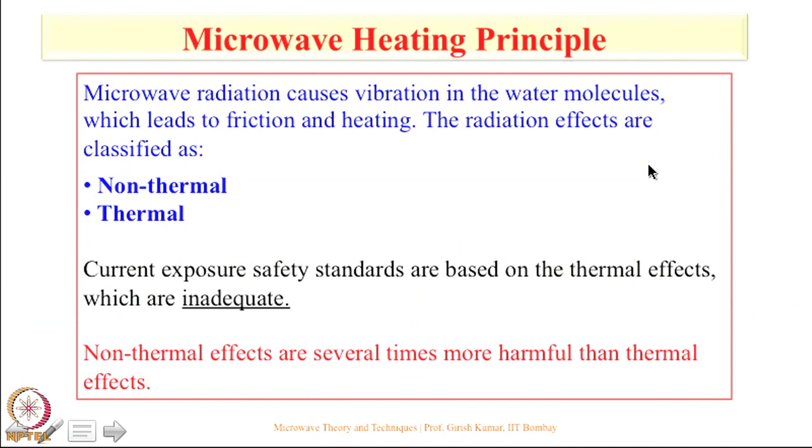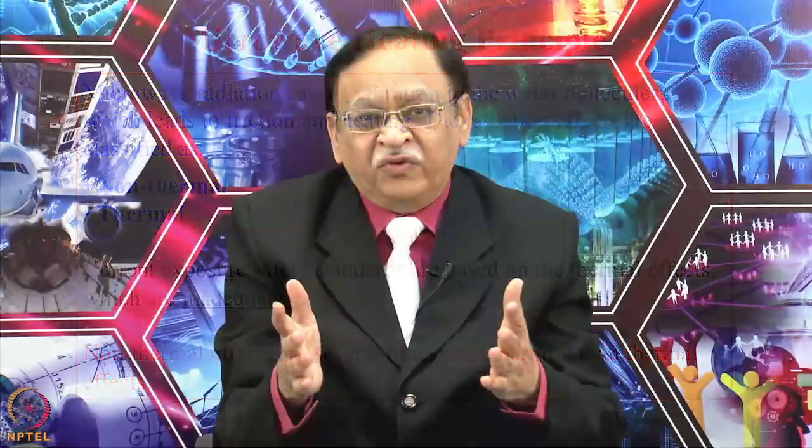Let us talk about the microwave heating principle. When we put food inside a microwave oven, it is the water in the food which receives the microwave radiation, and these water molecules start vibrating. At 2.45 GHz they vibrate at a speed of 2.45 billion times per second. That vibration causes friction, friction causes heating, and that heating is responsible for cooking the food.